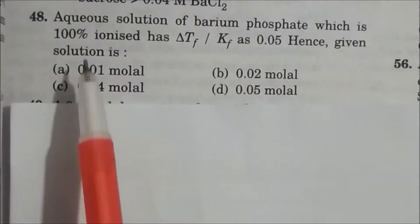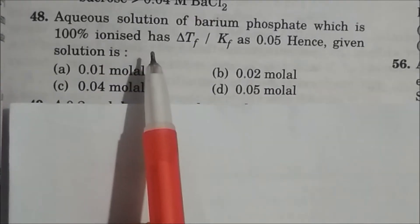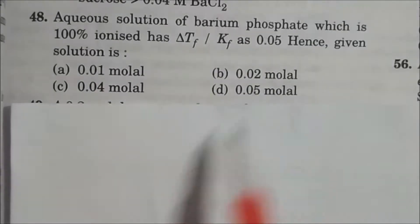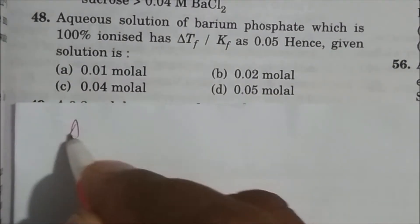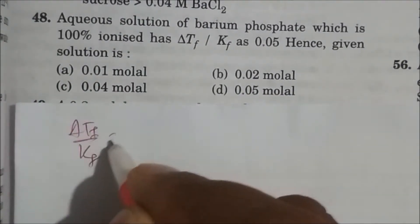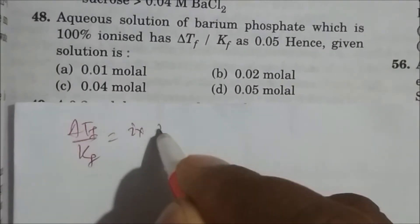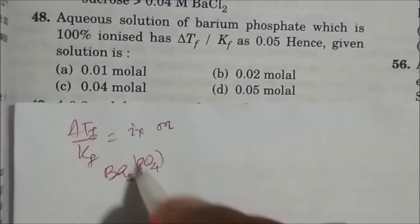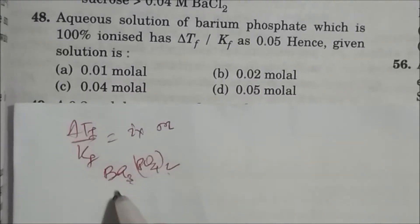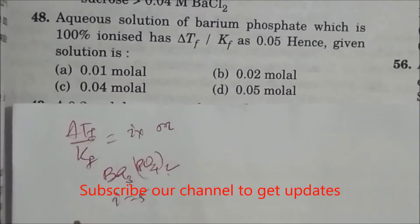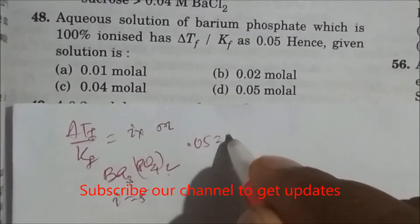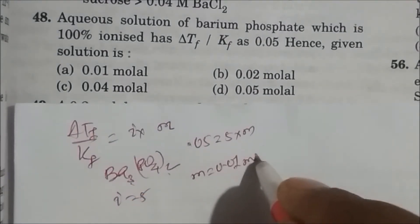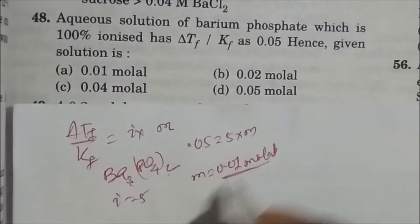A solution of barium phosphate which is 100% ionized has a freezing point depression delta tf divided by kf equal to 0.05. Using the formula delta tf = i × m, barium phosphate (Ba3(PO4)2) gives i = 5 (3 + 2 ions). So 0.05 = 5 × m, giving m = 0.01 molar. The answer is A.